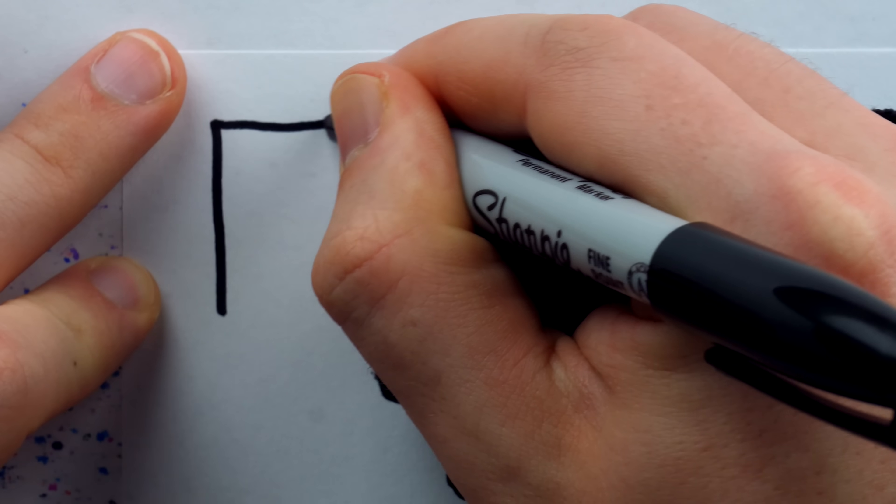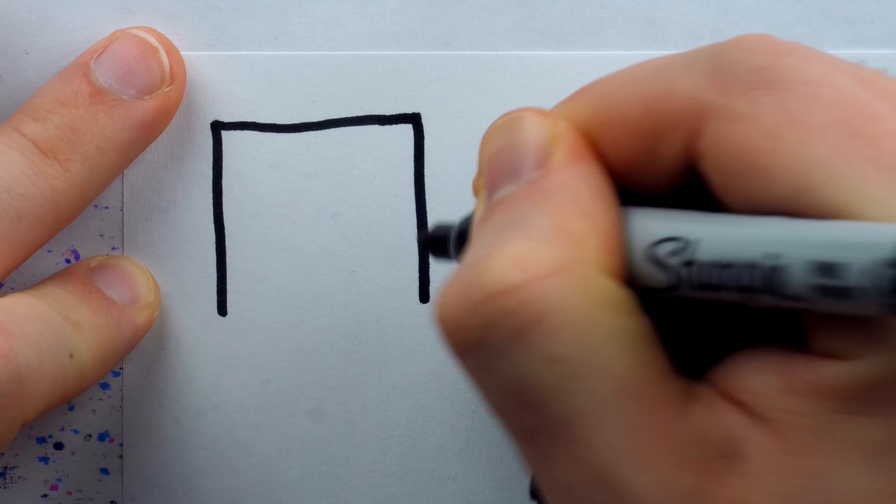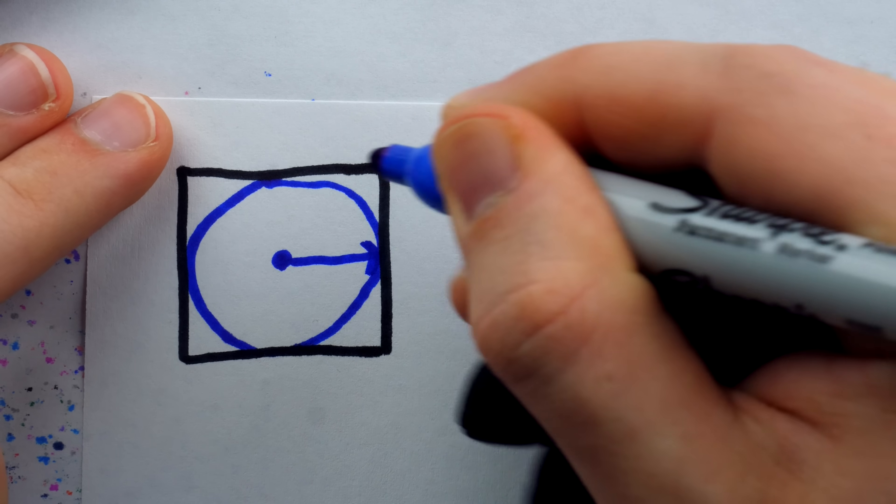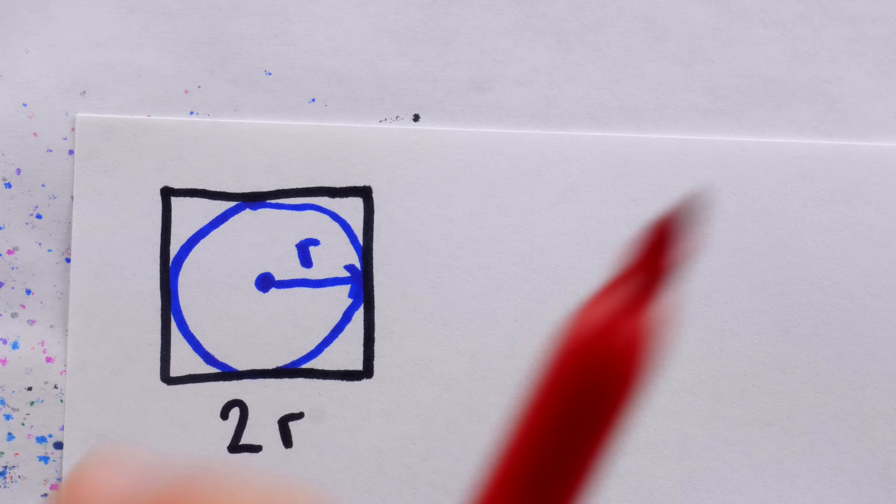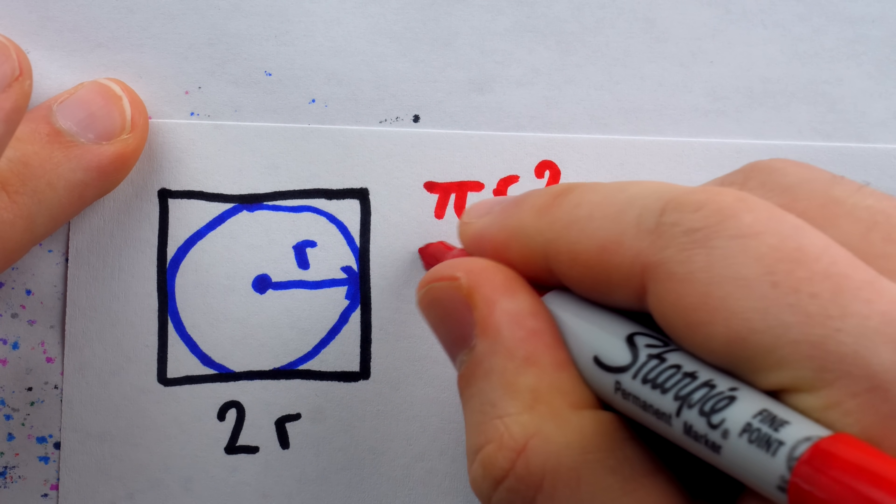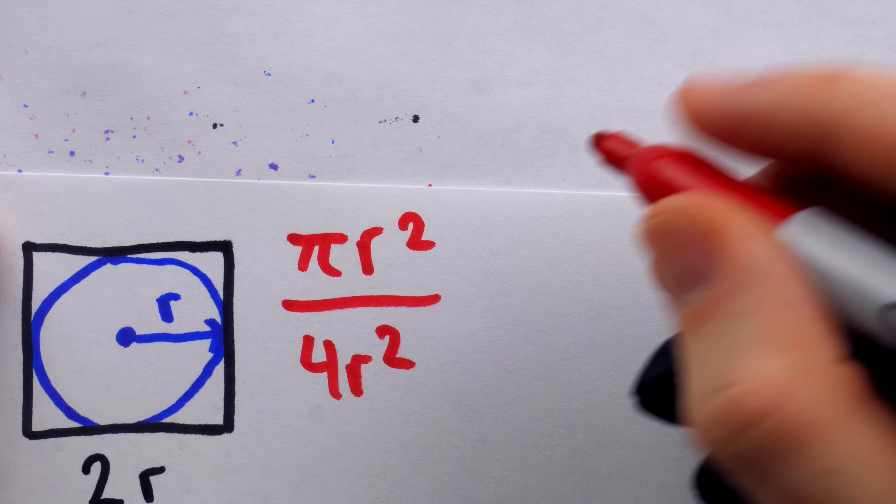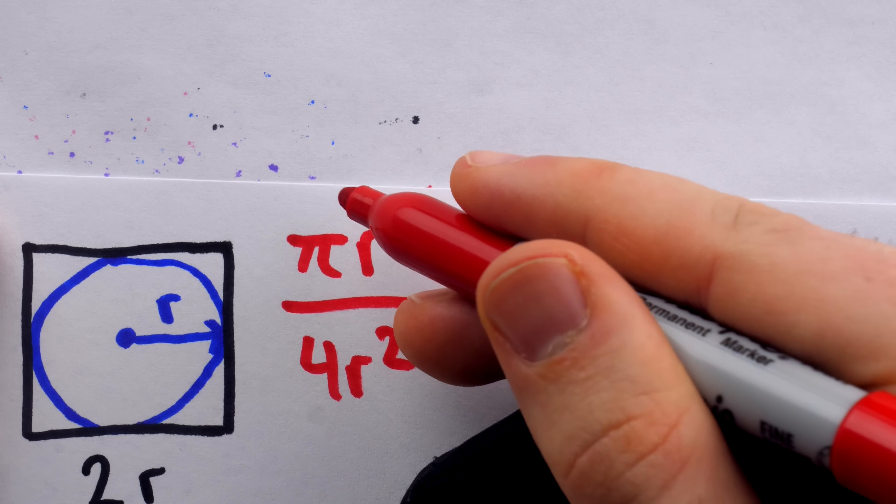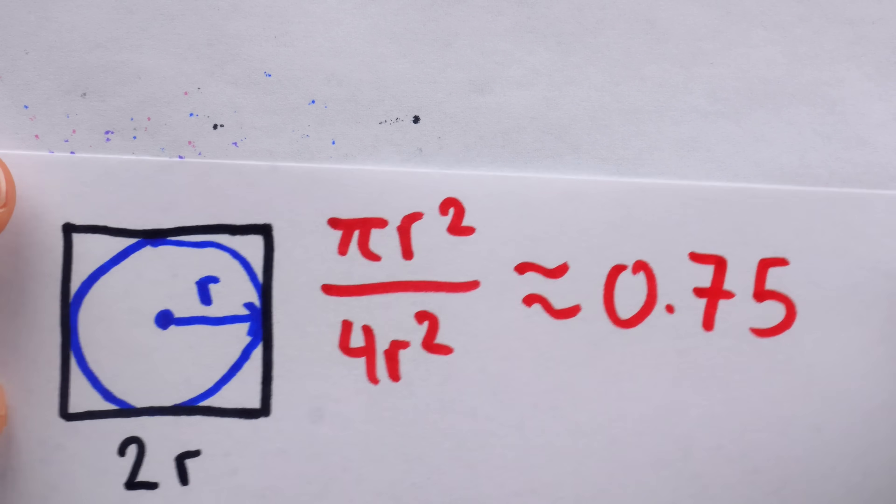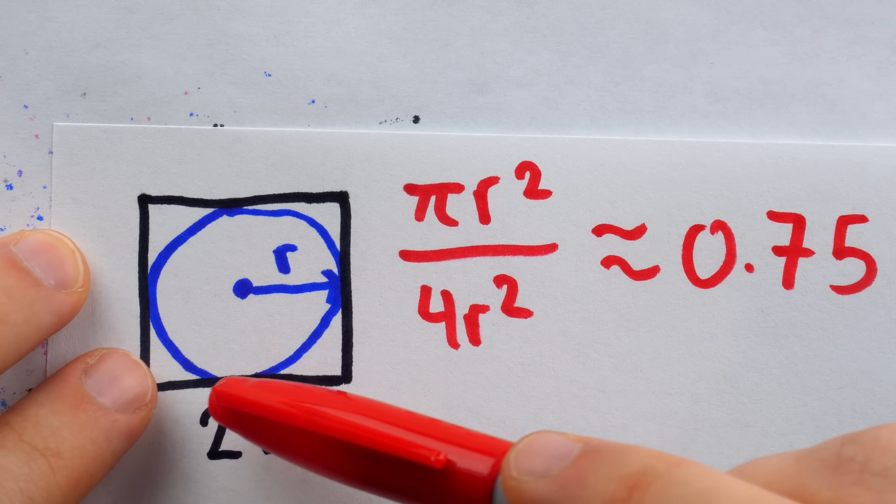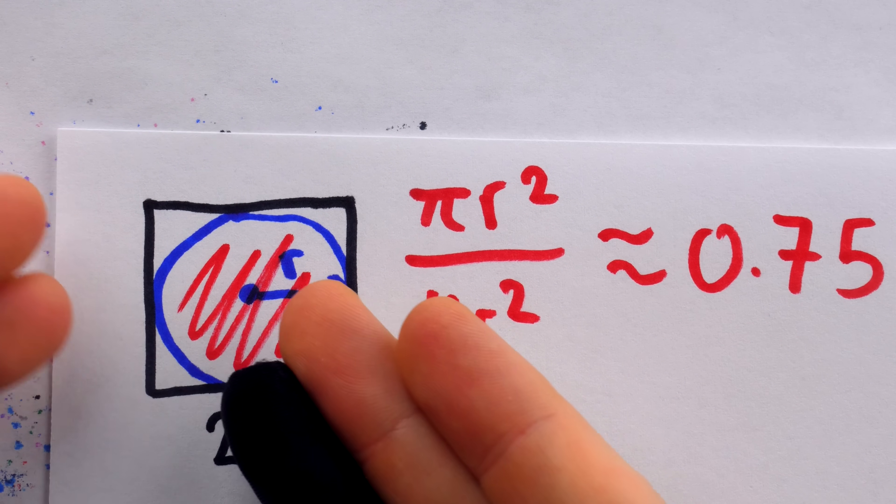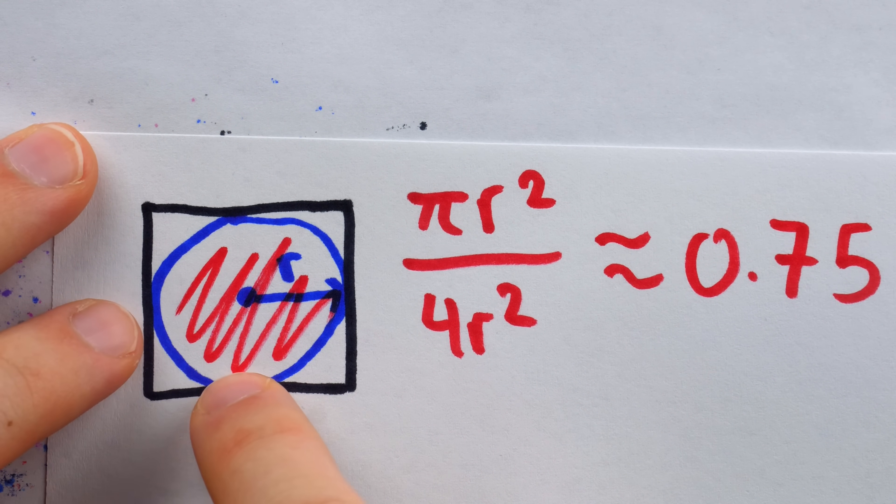For example, if we look at the 2D situation here, things are a lot more straightforward. Here's a square, and here's my best attempt at an inscribed circle. The circle has radius r, and so the side lengths of the square are 2r. Thus, the ratio of areas is pi r squared for the circle divided by 2r squared, which is 4r squared for the square. Pi's a bit over 3, so this is a bit over 3 fourths, around 0.75. The circle should take up about 75% of the square's area, and our eyes confirm that. We can get an accurate idea just by looking at it.